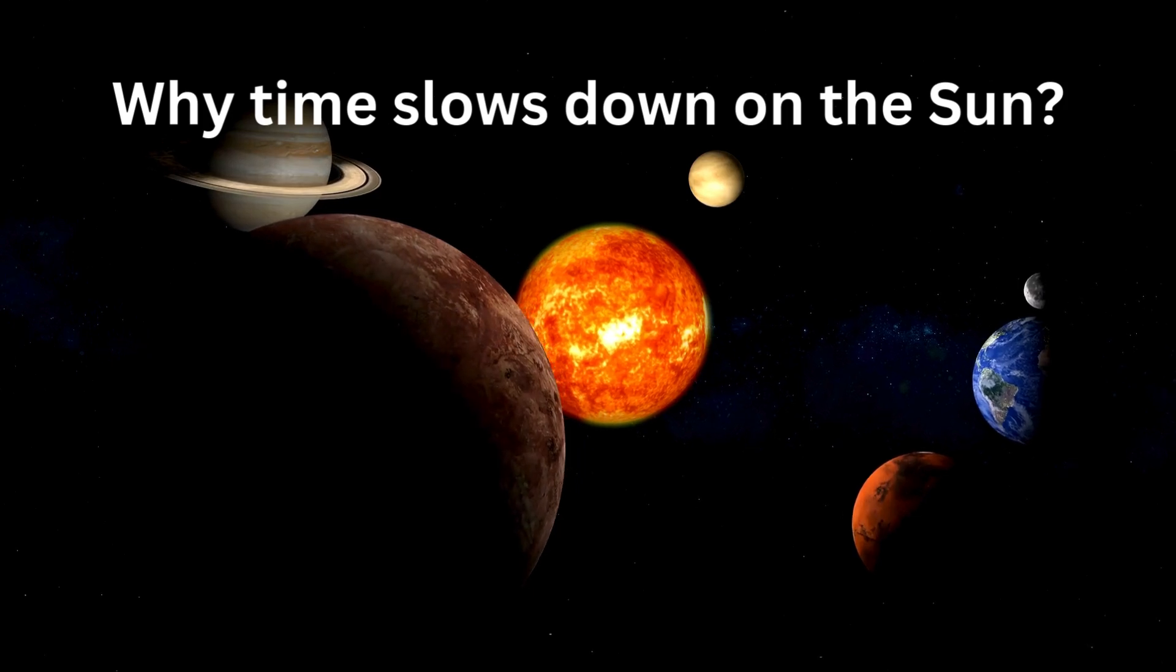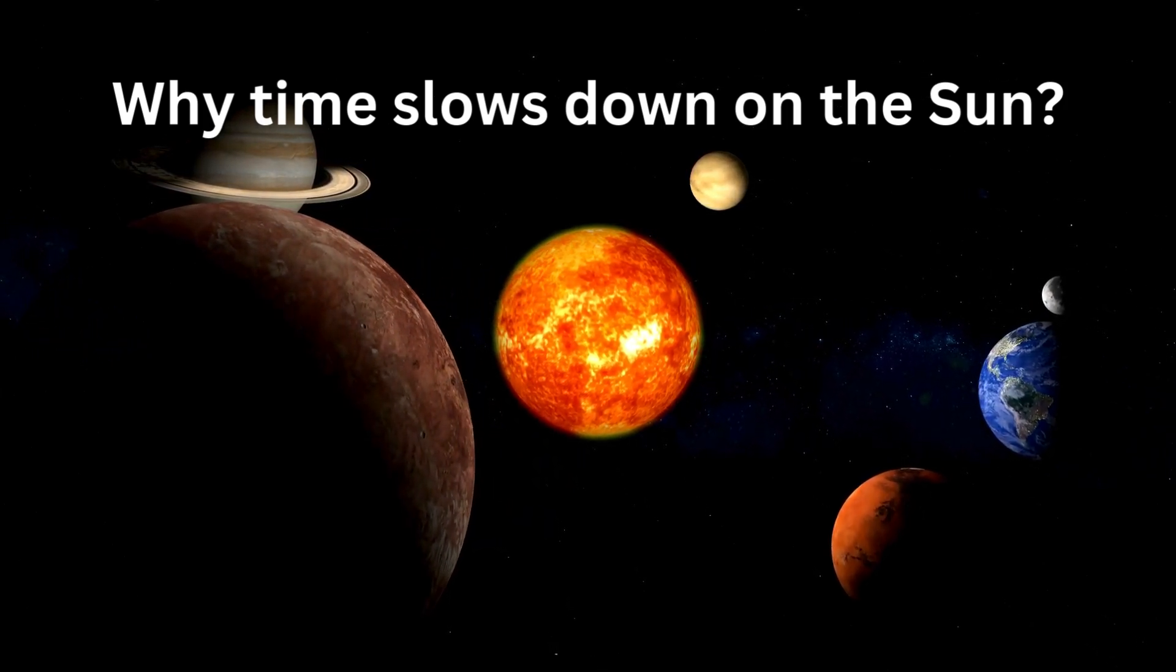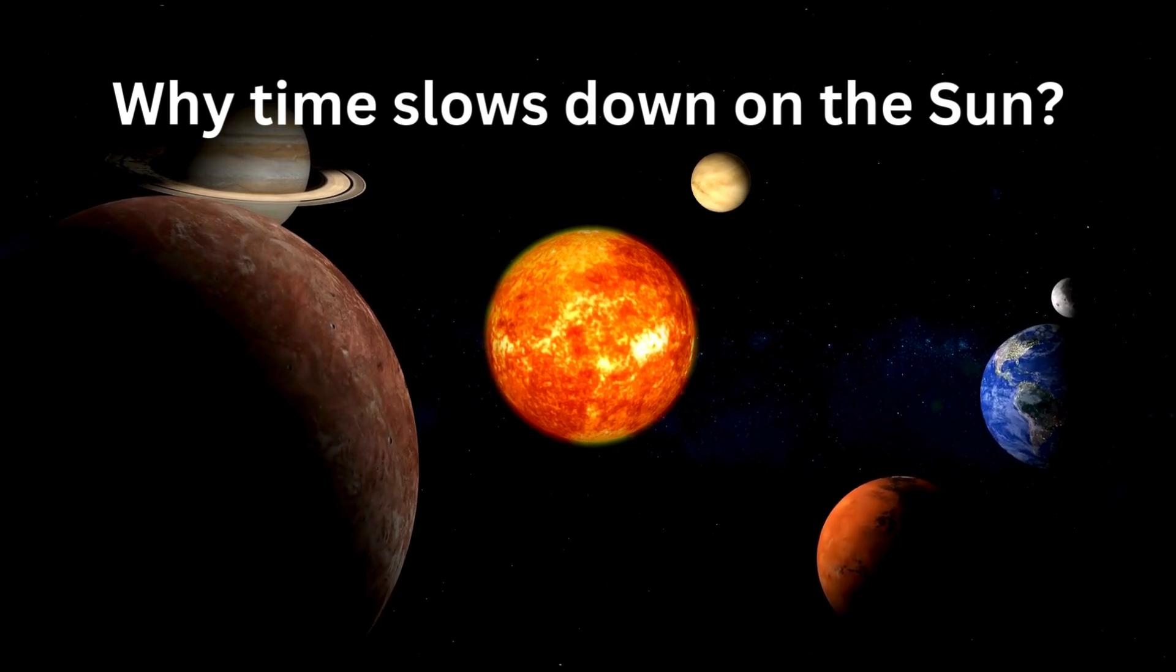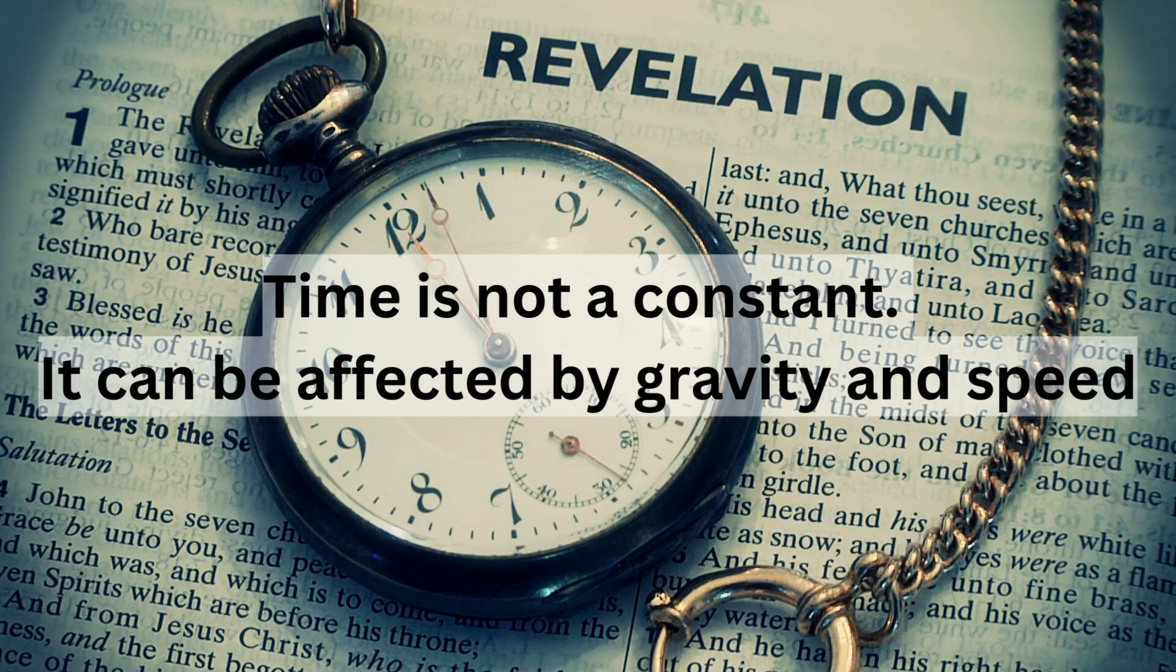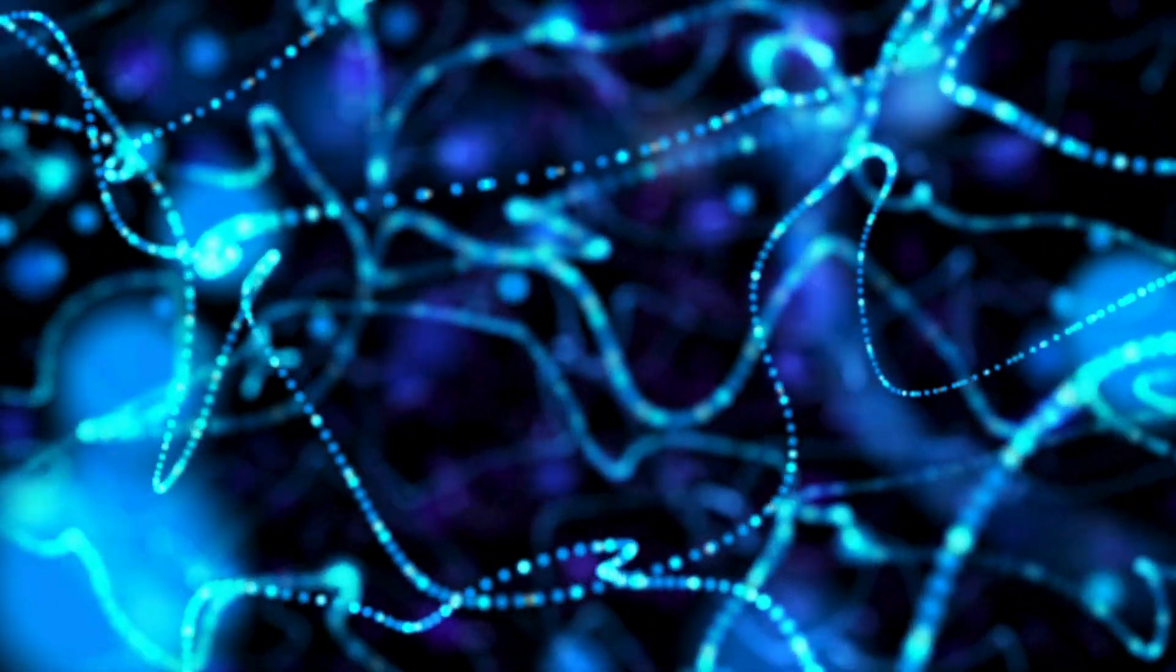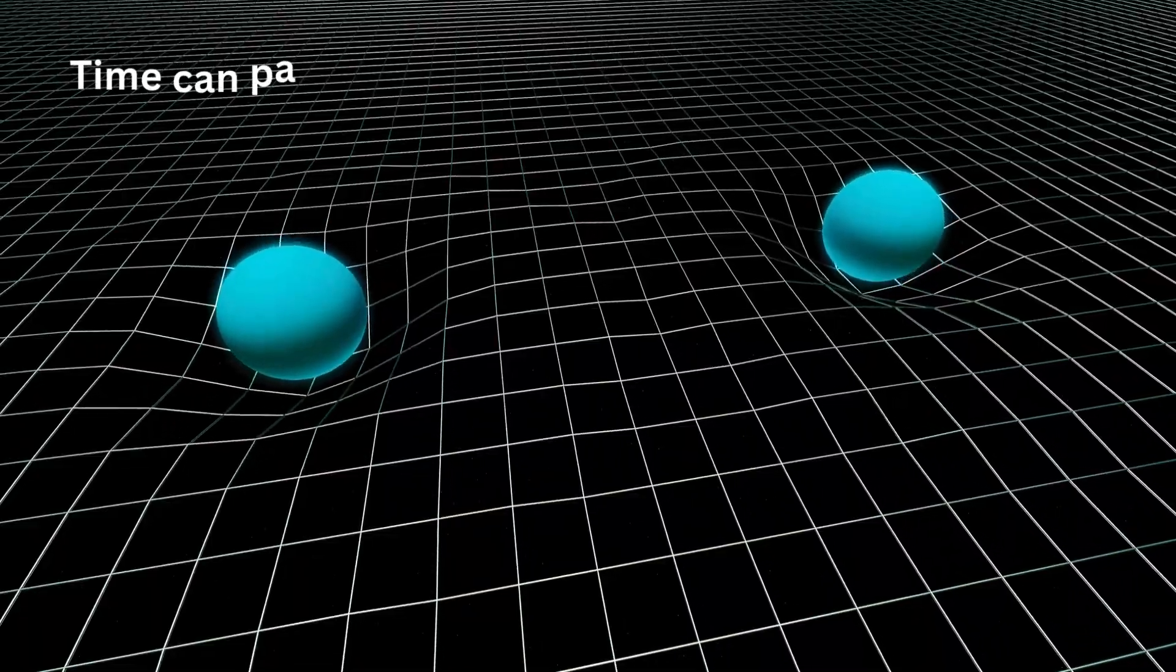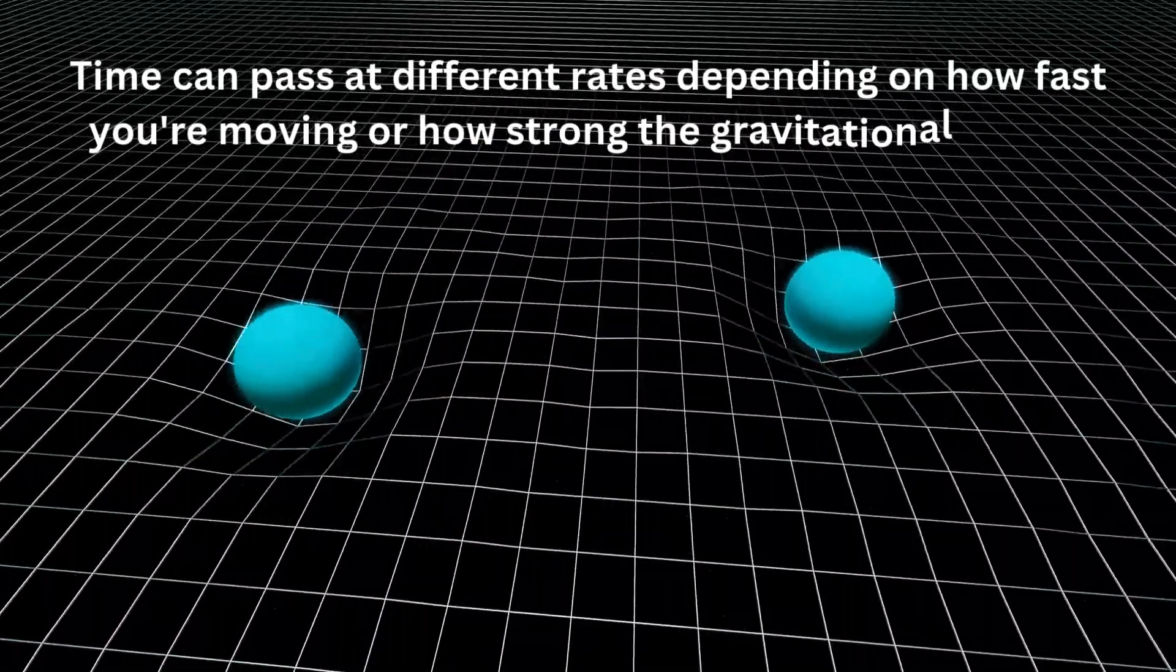Let's explore this intriguing phenomenon using the principles of relativity. First, let's get our basics down. According to Einstein's theory of relativity, time is not a constant. It can be affected by gravity and speed. This leads us to the concept of time dilation, which states that time can pass at different rates depending on how fast you're moving or how strong the gravitational field is.